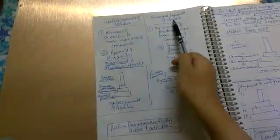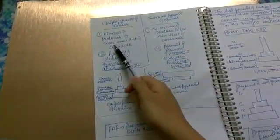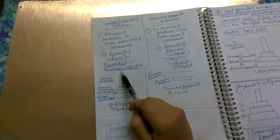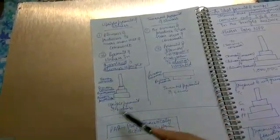Upright pyramid of biomass versus inverted pyramid of biomass. In upright, producers are more than the consumers. In inverted, producers are less than consumers. Upright is always upright, inverted is always inverted.